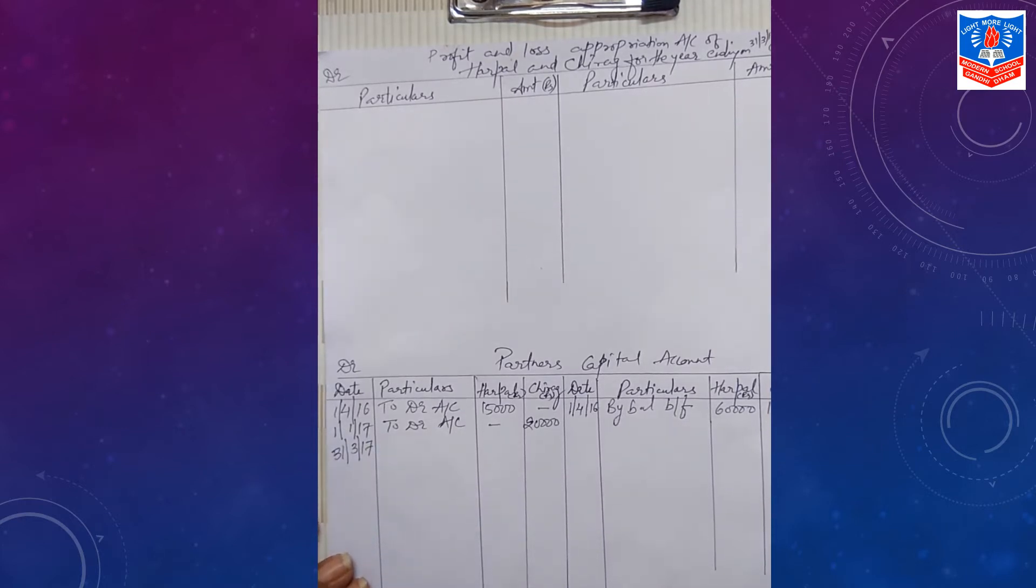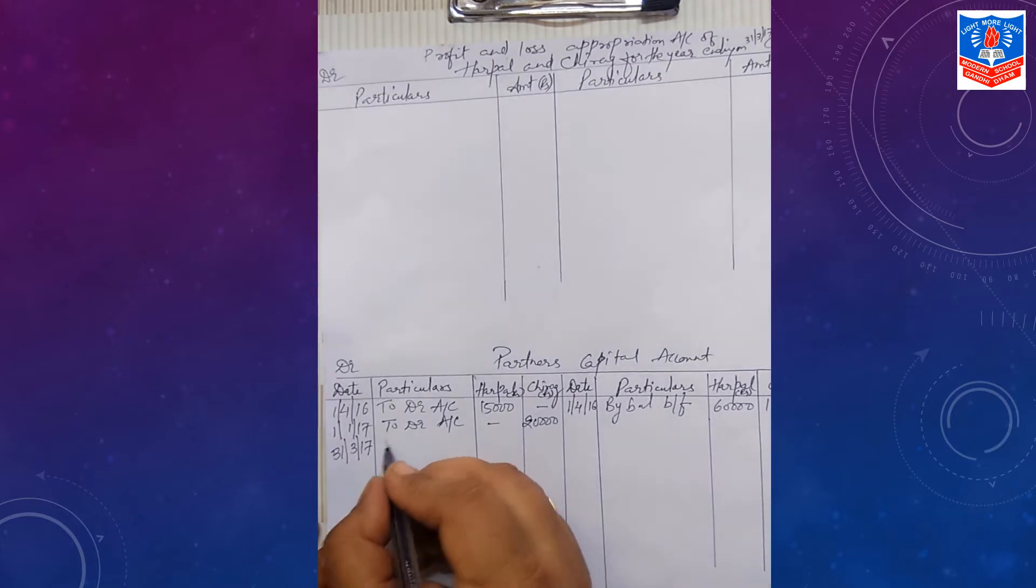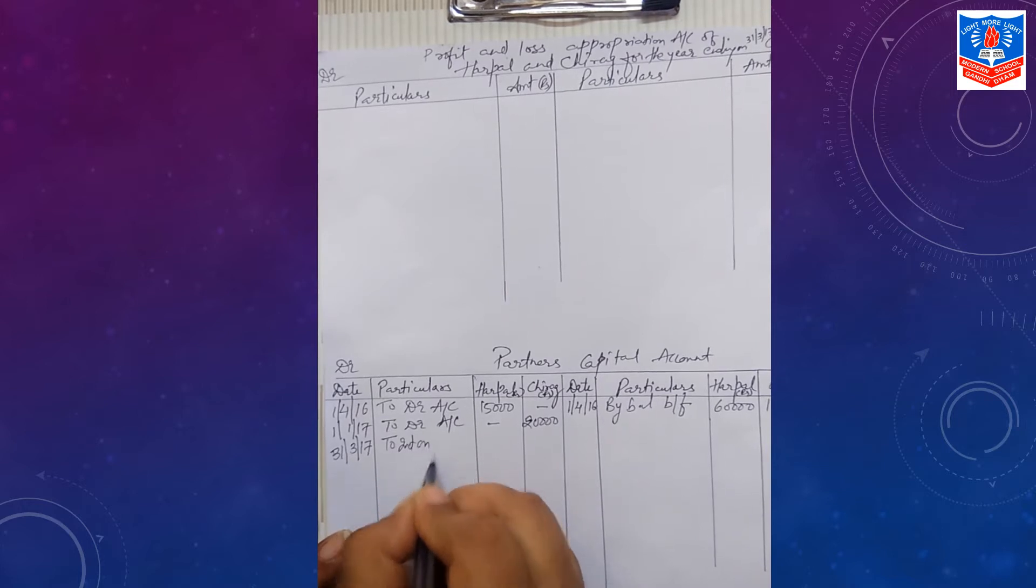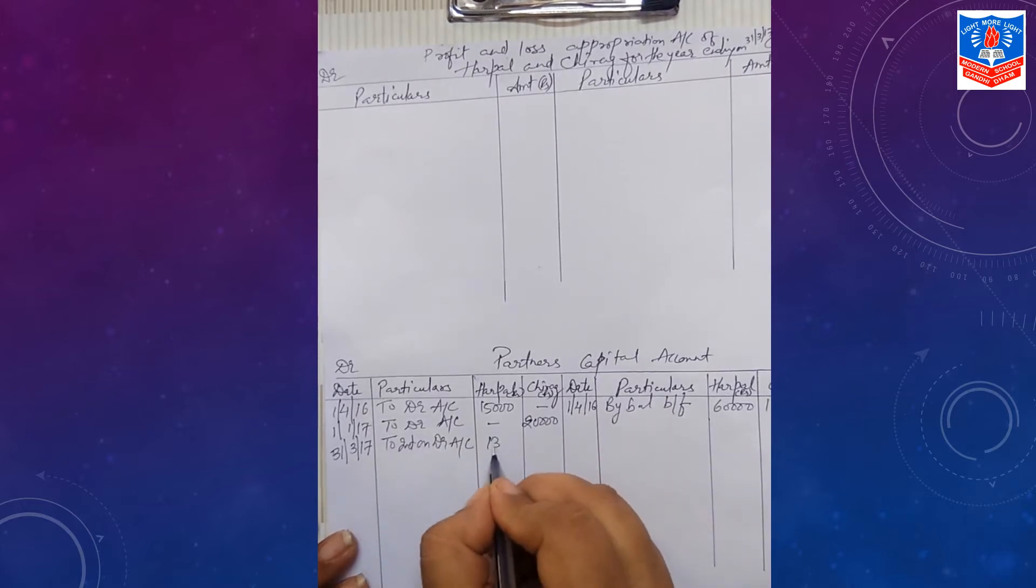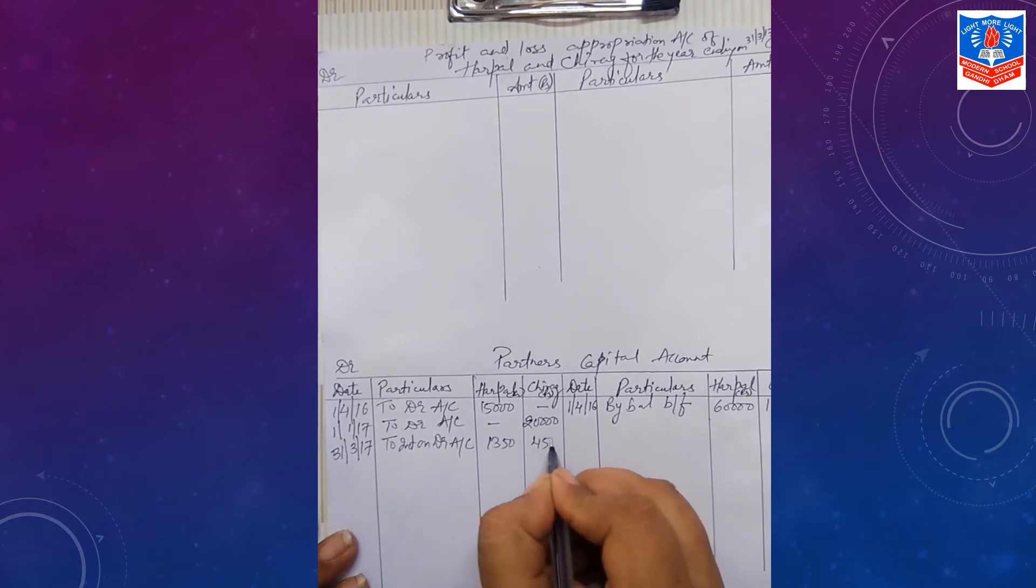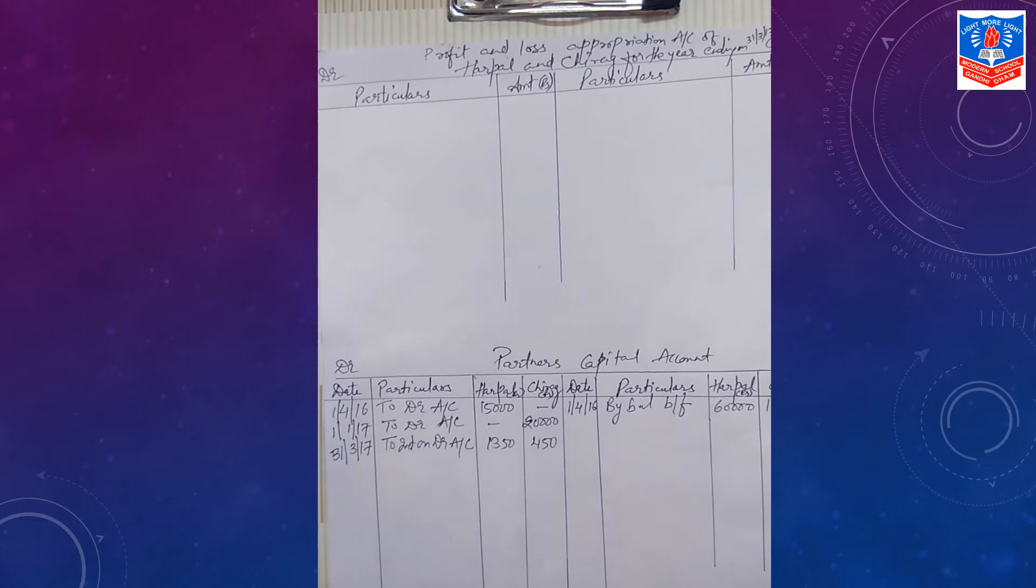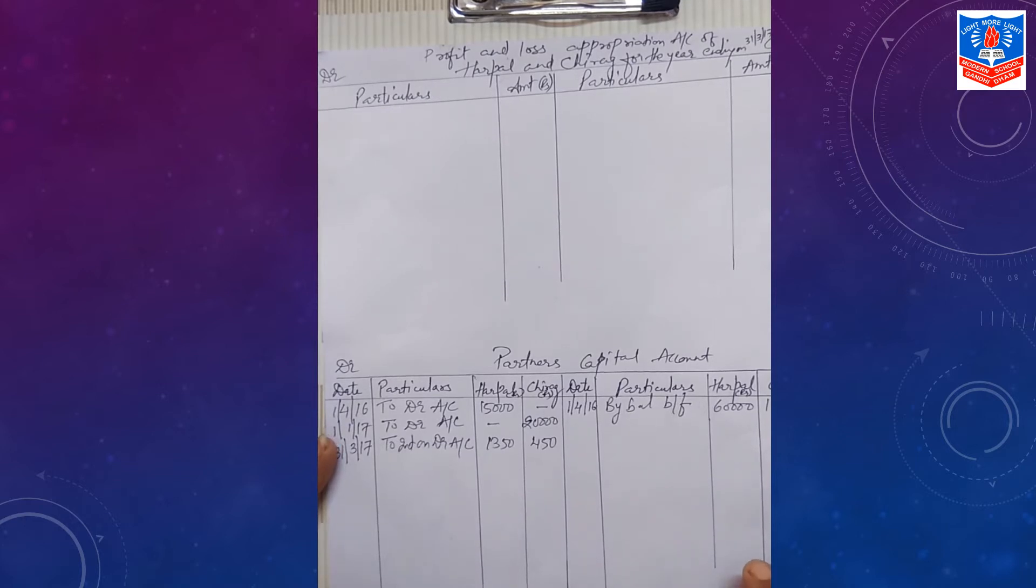Even interest on drawings is debited to partner's capital account. But interest will be calculated on the last date of the year, 31st March 2017. Interest, we have calculated. Let us put it here: to interest on drawings. For Harpal it is Rs. 1,350, for Chirag it is Rs. 450.